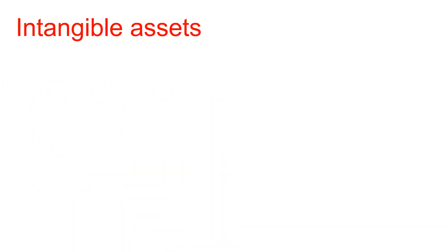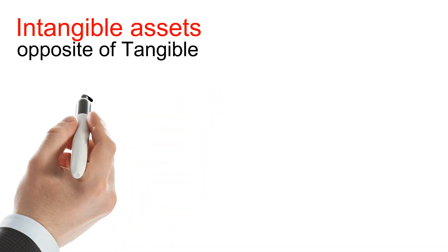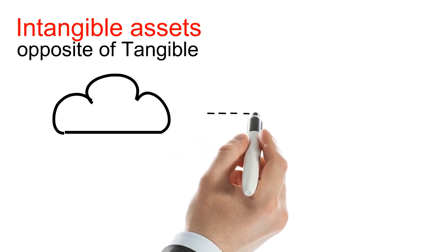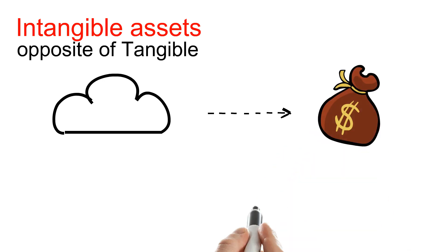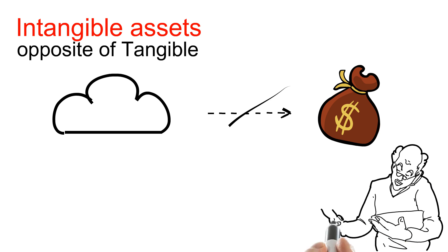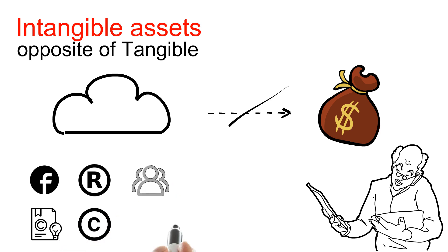Intangible assets are the opposites of tangible assets — non-physical items that add value to your business. Unlike tangible assets, you cannot easily convert intangible assets into cash. You can amortize intangible assets; amortization is when you distribute the cost of an intangible asset over time. It can be difficult to determine the cost of an intangible asset because they are not physical properties or items. Examples of intangible assets include logos, patents, trademarks, copyrights, customer lists, and business licenses.